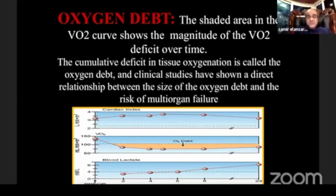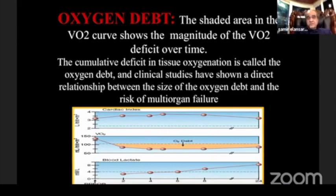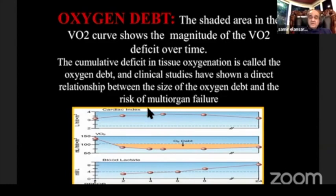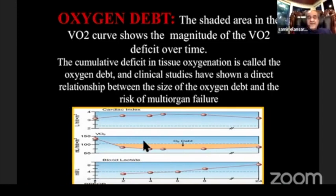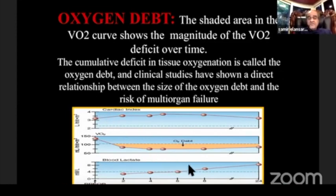Oxygen debt — oxygen uptake equals oxygen delivery times oxygen extraction. Suppose oxygen delivery goes down and oxygen extraction reaches maximum — normally 20 to 30%, but it can reach 50%. If it reaches more than 50%, there will be more oxygen debt. Oxygen debt is a good parameter and marker before lactate rises, by about six hours. It is a very sensitive parameter for detecting early state of hypoxia, early anaerobic metabolism — even before lactate rises.